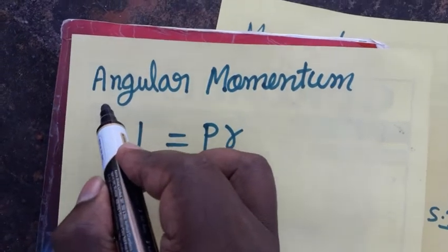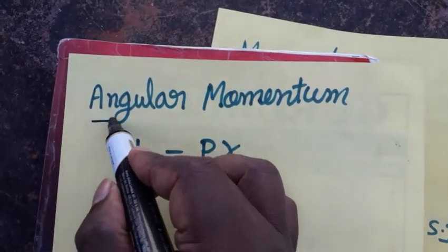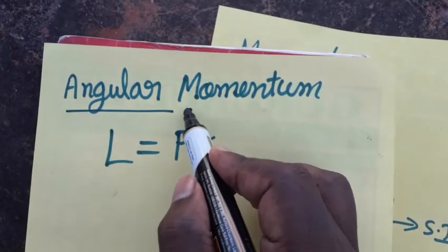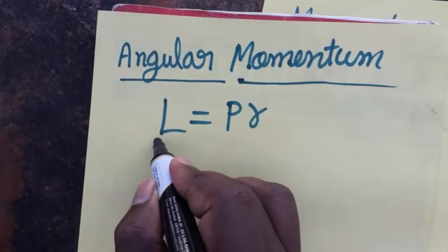Today we are going to learn how to find the SI unit and dimensional formula for angular momentum. Angular momentum symbol will be L.